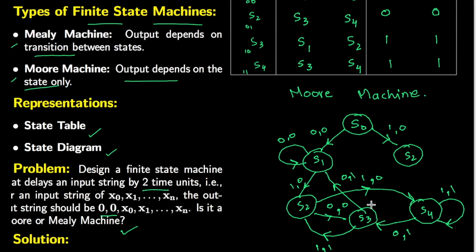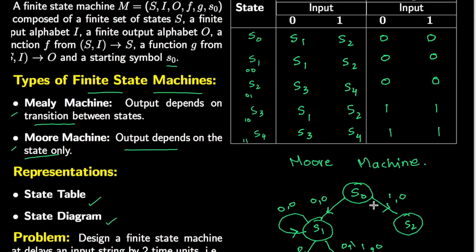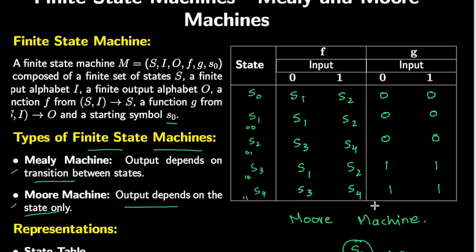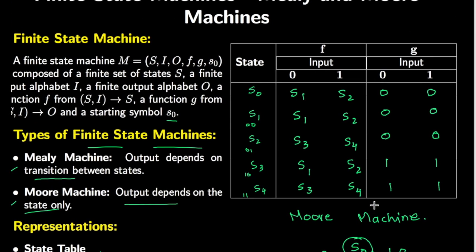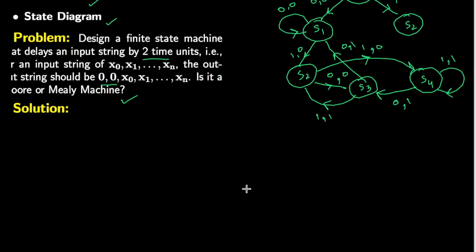As a recap, we have implemented the ideas of finite state machines to solve a problem, and we have also seen what types of finite state machines exist and how to classify whether a specific machine is a Mealy machine or a Moore machine. Hope it was easy to understand — thanks for watching!